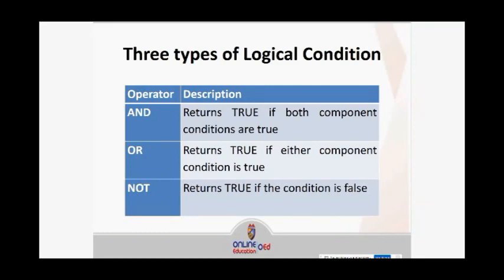When you say AND, it returns true if both of the component conditions are true. So what we're saying is if you have two conditions, both of the two conditions must be true or must be satisfied for it to return the output. The OR operator returns true if either of the component conditions is true — so if you have two different conditions, one true and one false, that's okay as long as there is one true. And for the NOT operator, it returns true if the condition is false — so it's the opposite.